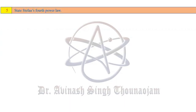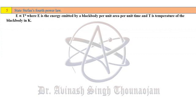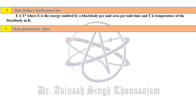Stefan's fourth power law: E is directly proportional to T raised to 4, where E is the energy emitted by a black body per unit area per unit time, and T is the temperature of the black body in Kelvin. This law states that if you increase the temperature of a black body, the amount of energy emitted will also increase, and the increase will be in the order of the fourth power.